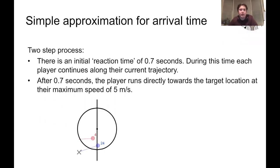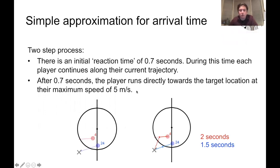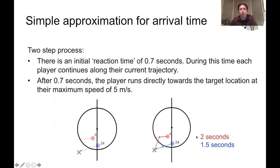Let's look at the two closest players to the target location: player four on the red team and player 24 on the blue team. The arrows indicate their velocities at the moment the pass is played. Player four carries on along his initial trajectory for 0.7 seconds then turns and runs at maximum speed towards the target. Player 24 was essentially already moving in the right direction, so continues along his path for the reaction period then moves to the target. It takes player four about two seconds to arrive and player 24 about one and a half seconds.